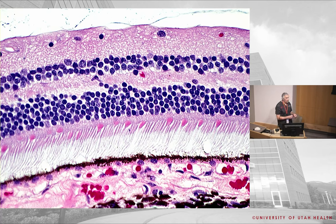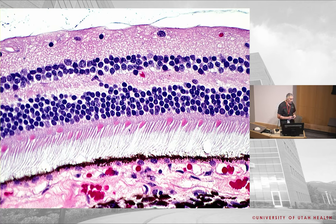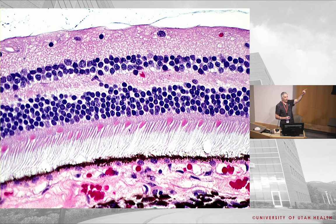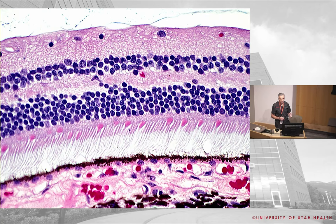From the bipolar cell the signal synapses with the ganglion cell, which lives in the ganglion cell layer. The axon of the ganglion cell travels through the retinal nerve fiber layer (RNFL) out through the optic nerve, through the chiasm, and all the way back to synapse at the lateral geniculate body. That's an incredibly long axon, and any disruption along it can lead to atrophy of that ganglion cell.